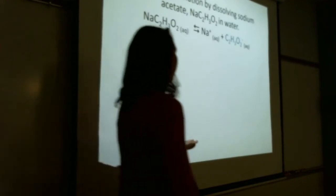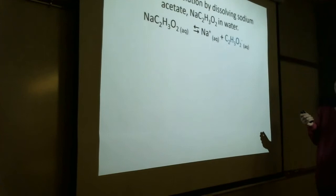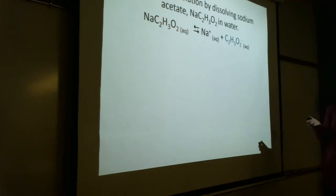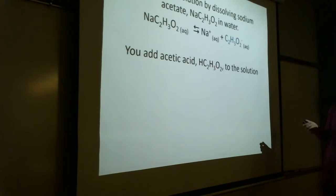Let's talk about the common ion effect first. If you make a solution by taking sodium acetate and dumping it into water — that's NaC₂H₃O₂ (aq) — since it's soluble, it's really sodium ion and acetate ion. Now you also add some acetic acid to the solution.